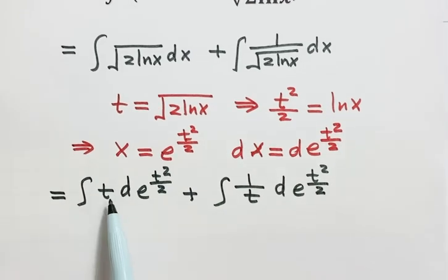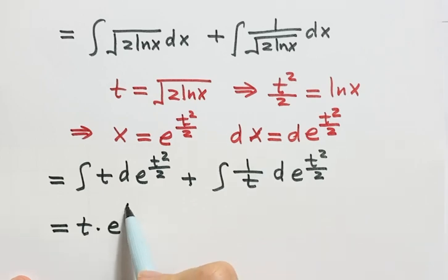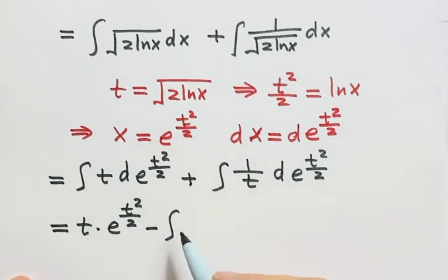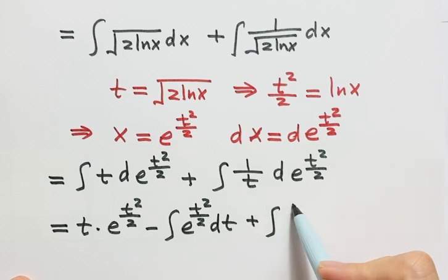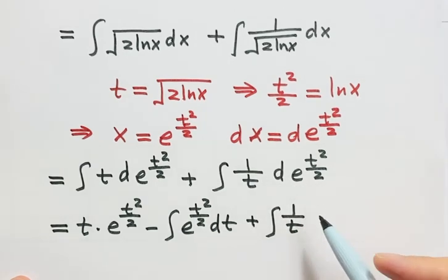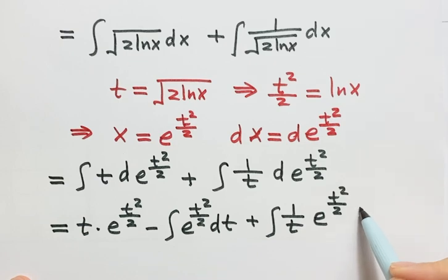Let's look at the first integral. Because here we have t with power 1, we can use integration by parts. So t is u and e to the power t squared over 2 is v. Based on the formula for integration by parts: u times v minus the integral of v times du. So we have t times e to the power t squared over 2, minus the integral of e to the power t squared over 2 times the derivative of t. The derivative via chain rule gives e to the power t squared over 2 times 2t over 2 dt.